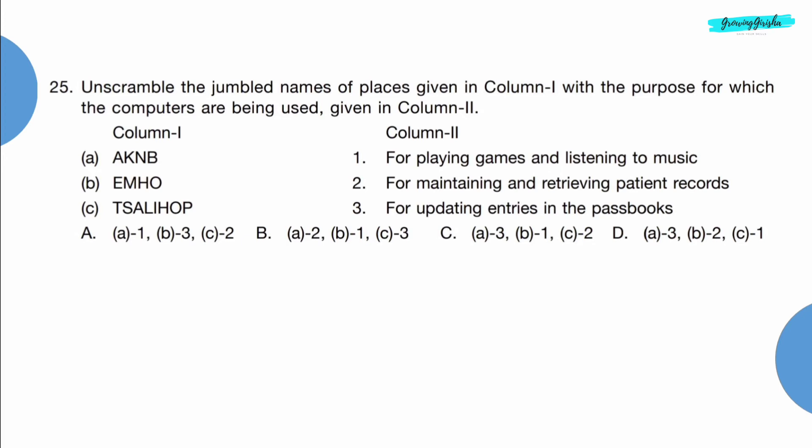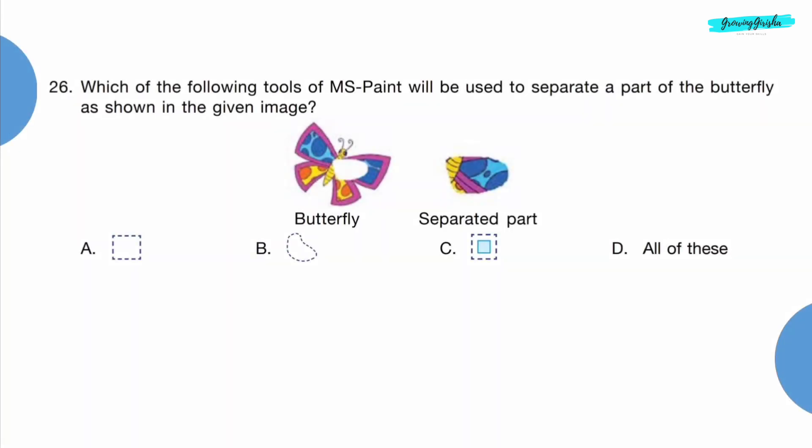Question 25: Unscramble the jumbled names of places given in Column 1 with the purpose for which the computers are being used given in Column 2. In banks, computers are used for updating entries in the passbook. At home, it is used for playing games and listening to music. And in hospitals, it is used for maintaining and retrieving patient records. So correct answer is option C.